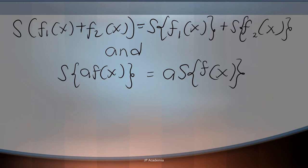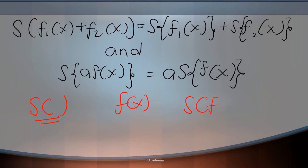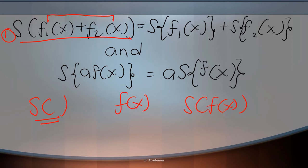If a system has a transfer function described by S — this is the characteristic of your system — such that the input F produces a corresponding output, then for any two inputs F1 and F2, the system is linear if and only if: first, given this transfer characteristic, the input as the summation of F1 and F2 produces an output equal to the sum of the outputs for each individual signal; and second, if the input is scaled by a constant A, then the output is equal to A times the output for that individual signal F.